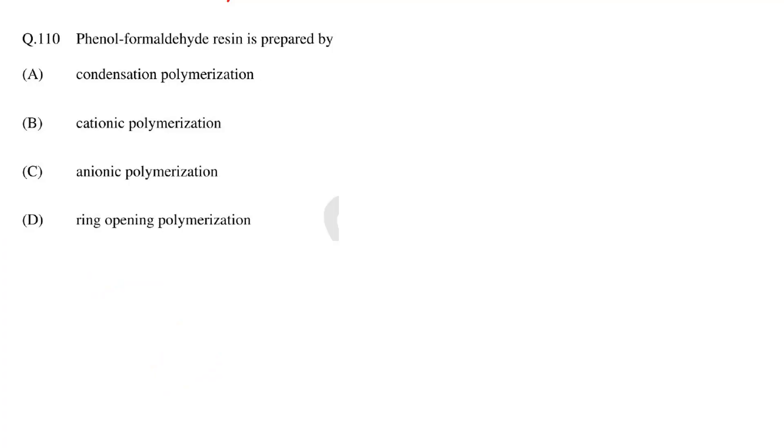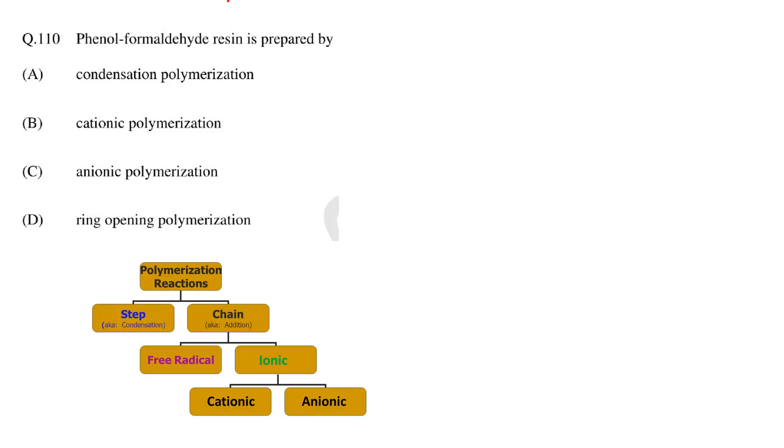In this question we need to identify the polymerization method to prepare phenol formaldehyde resin. There are two types of polymerization reactions: addition and condensation. Addition polymerization can be divided into radical and ionic polymerization, and ionic polymerization can be further divided into cationic and anionic polymerization. Monomers containing double bonds undergo addition polymerization or we can say that vinyl monomers undergo addition polymerization.